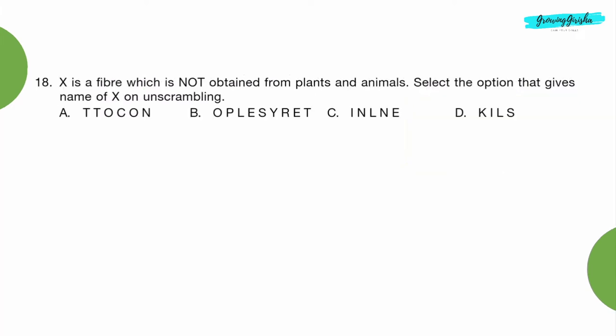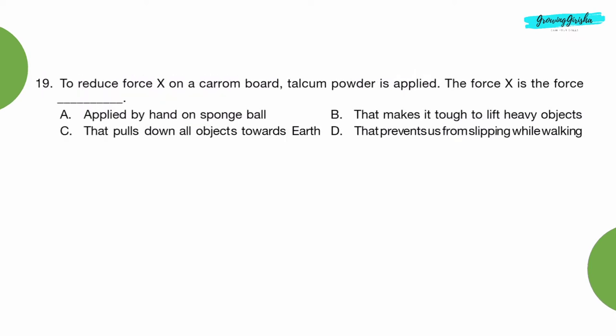Question 18: Eggs is a fiber which is not obtained from plants and animals. Select the option that gives name of eggs on unscrambling. Option B: Polyester. Question 19: To reduce force X on a carom board, talcum powder is applied. The force X is the force dash. Option D: That prevents us from slipping while walking.